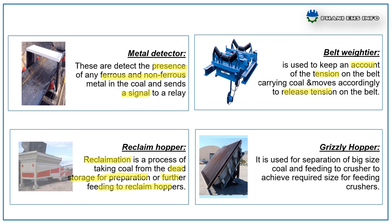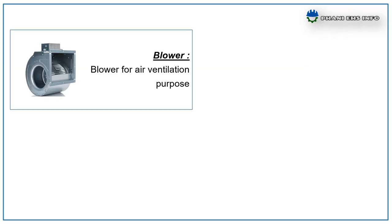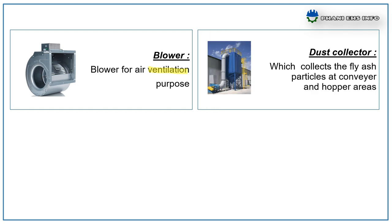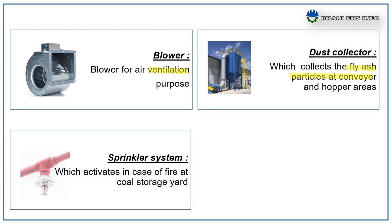Grizzly Hopper — used for separation of big size coal and feeding to the crusher to achieve the required size for feeding secondary crushers. Blower — for air ventilation purpose. Dust collectors collect fly ash particles at the conveyor and hopper areas. Sprinkler system activates in case of fire emergency. Electrostatic precipitator — a type of filter that uses static electricity to remove dust and ash from the exhaust.